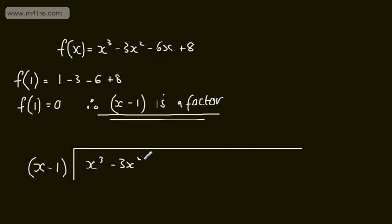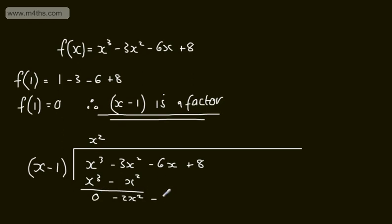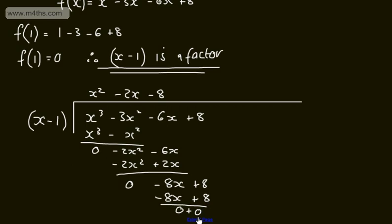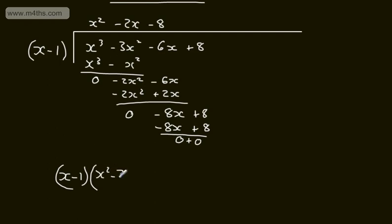We divide x cubed minus 3x squared minus 6x plus 8 by x minus 1. There are no missing terms, so no placeholders needed. x cubed divided by x gives x squared. Multiplying down gives x cubed and minus x squared. Subtracting leaves minus 2x squared; bring down minus 6x. Minus 2x squared divided by x gives minus 2x. Multiplying down gives minus 2x squared and plus 2x. Subtracting gives minus 8x; bring down the 8. Minus 8x divided by x gives minus 8. Multiplying down gives minus 8x and plus 8. The remainder is 0.